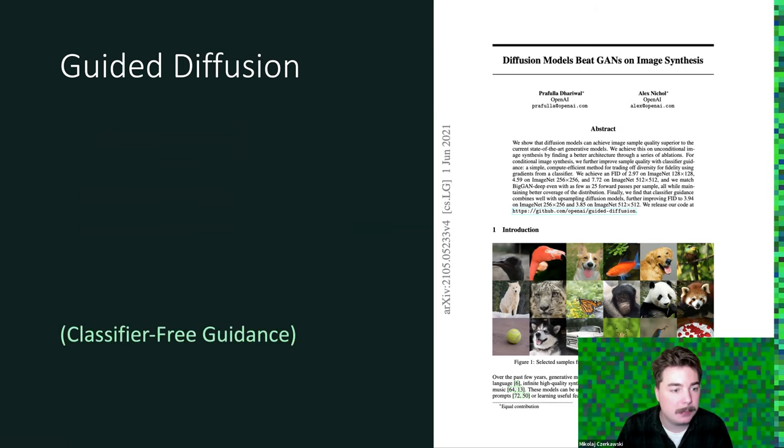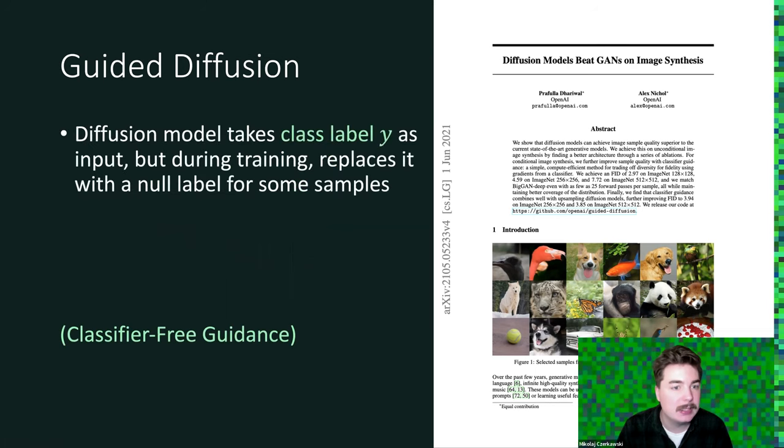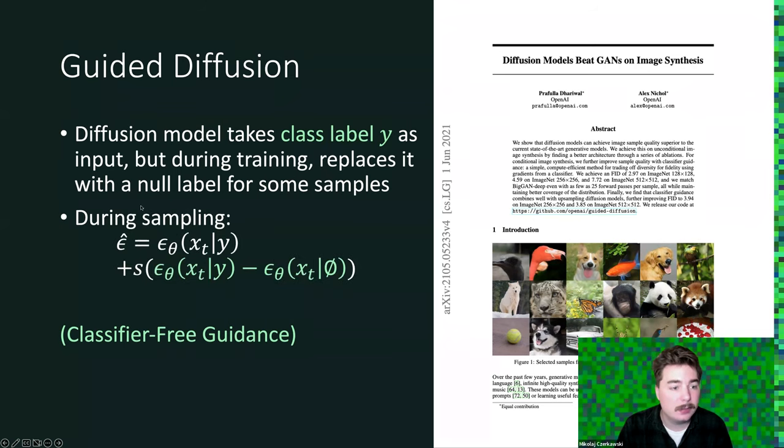In the same paper, there has also been a proposal of classifier-free guidance, where a diffusion model takes class label y as input. But during training, it replaces it with a null label for some samples.